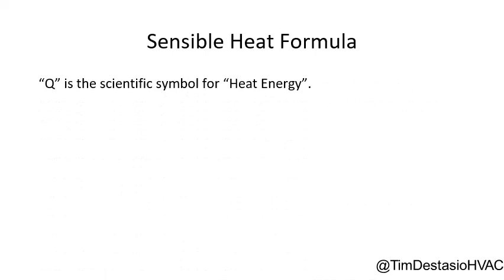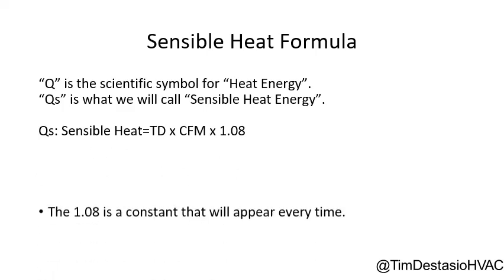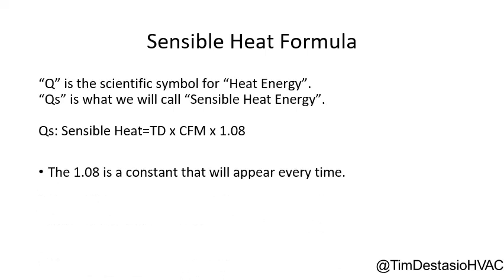Before we look at the sensible heat formula, we need to understand what the symbols mean — don't be intimidated by symbols you don't recognize. The first symbol is Q, a scientific symbol for heat energy used in physics. Qs is what we call sensible heat energy — the sensible heat in BTUs per hour that we're calculating. The formula is: sensible heat equals temperature difference times CFMs times a constant of 1.08. That constant 1.08 will appear every time; as service technicians, we just need to remember and plug it in.